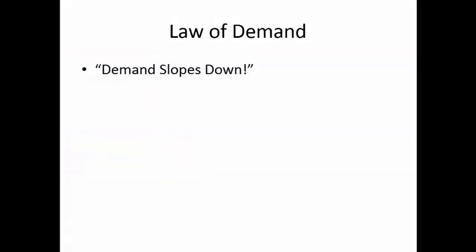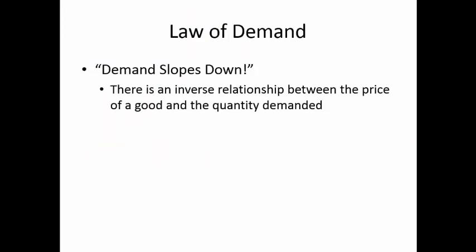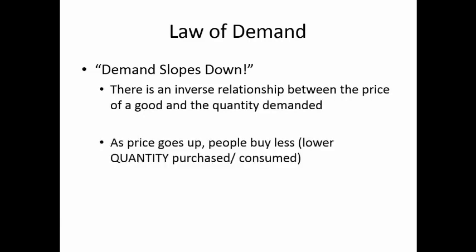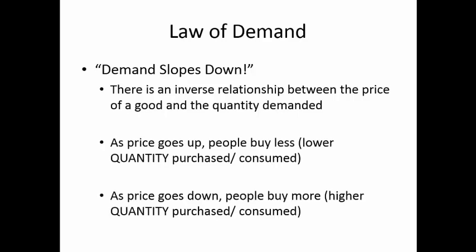With those notes in mind, we can launch into the demand curve proper, beginning with the law of demand. Demand slopes down — it's that simple. There's an inverse relationship between the price of a good and the quantity demanded. As the price of a good goes up, people buy less of it; as the price goes down, people buy more of it. This is always the case for all goods at all times.